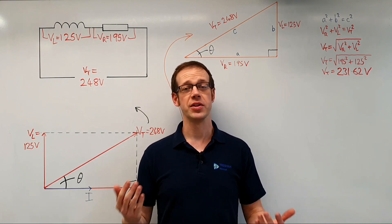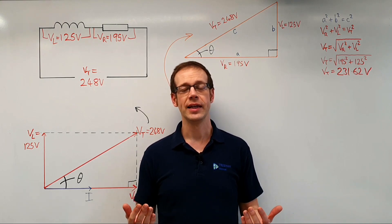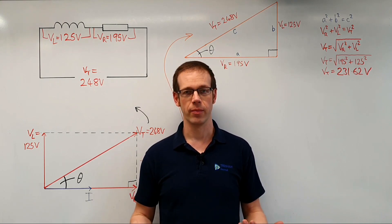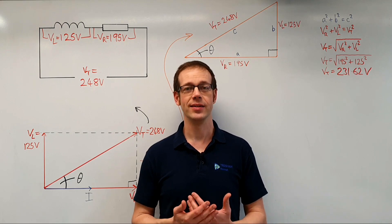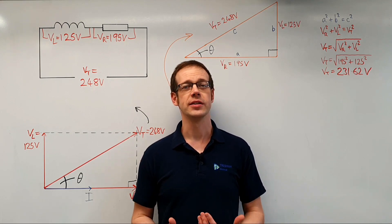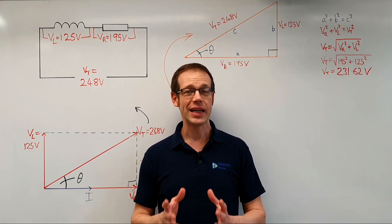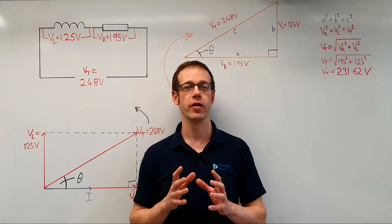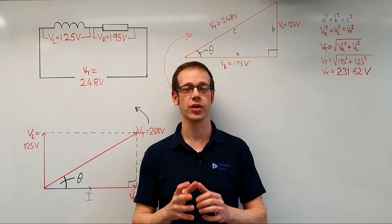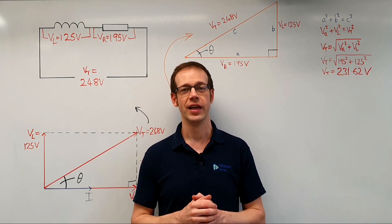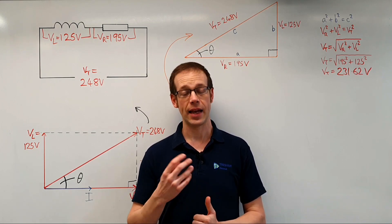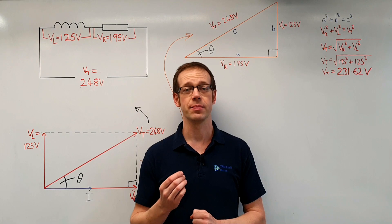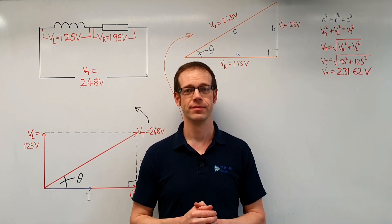What we haven't mentioned so far is where impedance comes from and what impedance is. It's important to know that impedance is just another form of opposition to current flow, and like all other oppositions to current flow, it is measured in ohms.